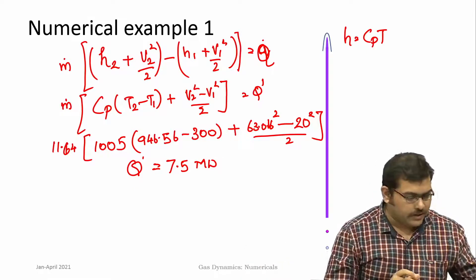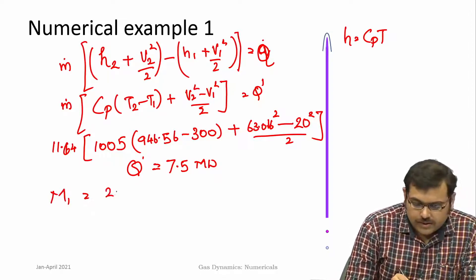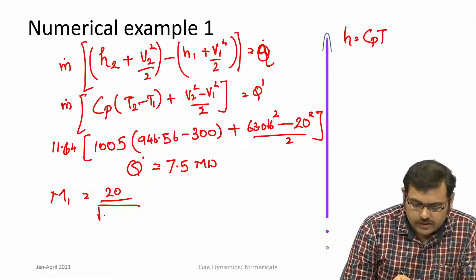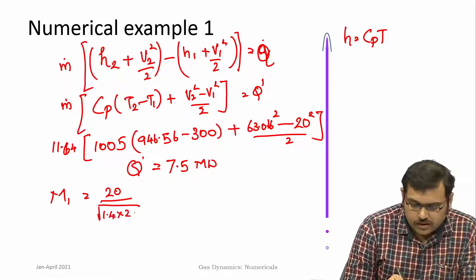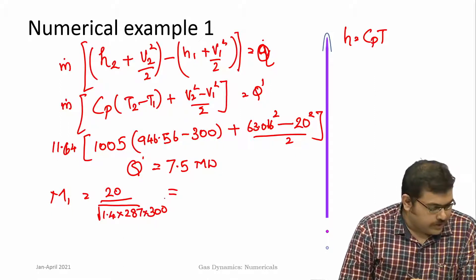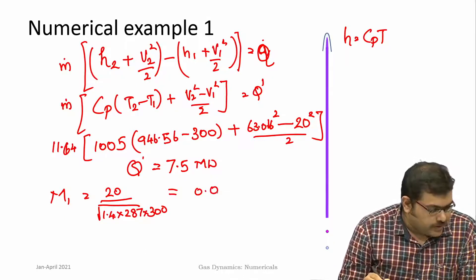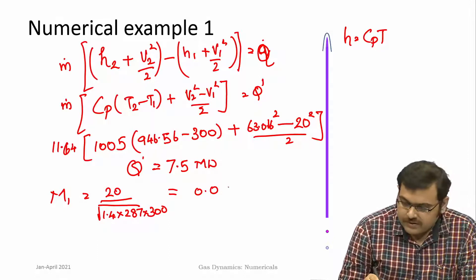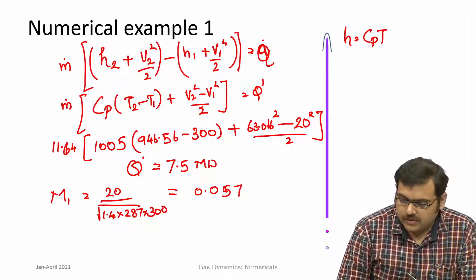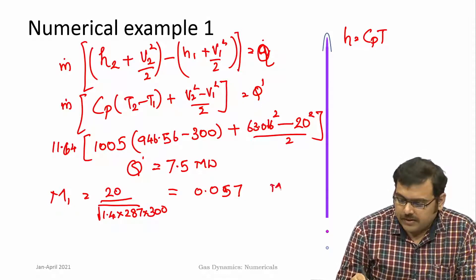If we look at the Mach number at station 1, it is 20 divided by the speed of sound which is square root of gamma R T. This Mach number at 1 is quite small, around 0.0557. Definitely this is not a compressible flow, its Mach number is less than 0.3, so it is incompressible.